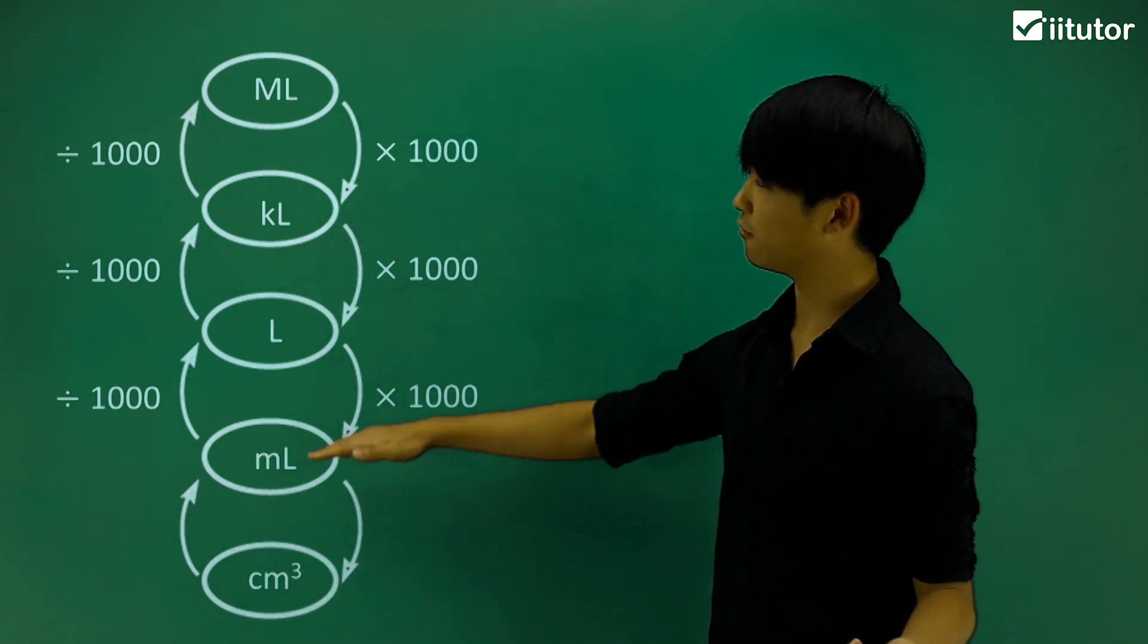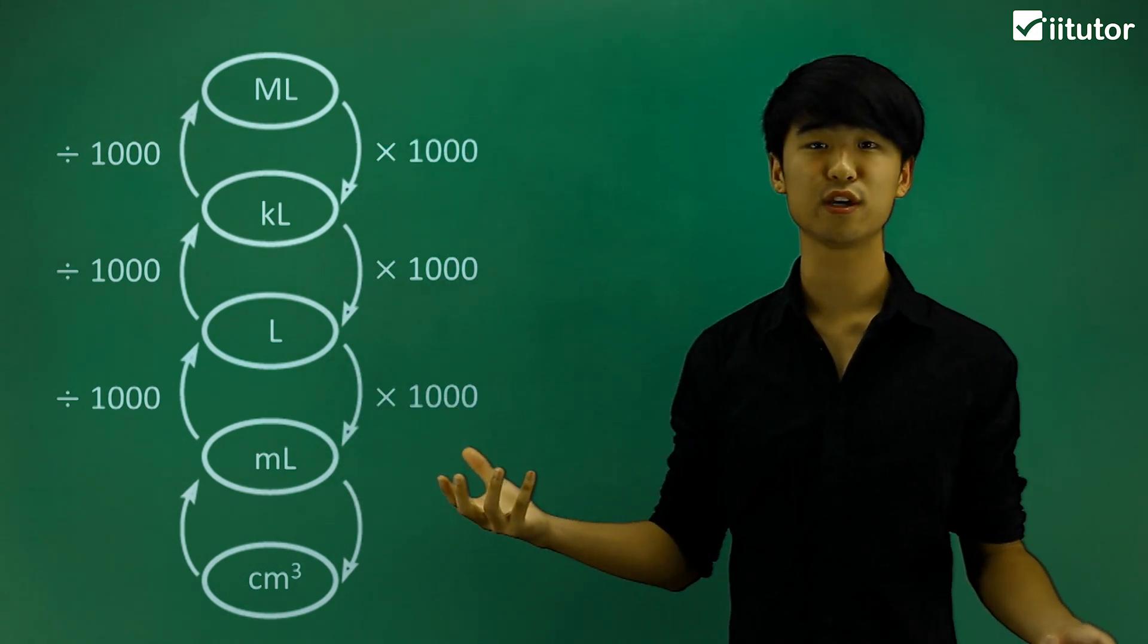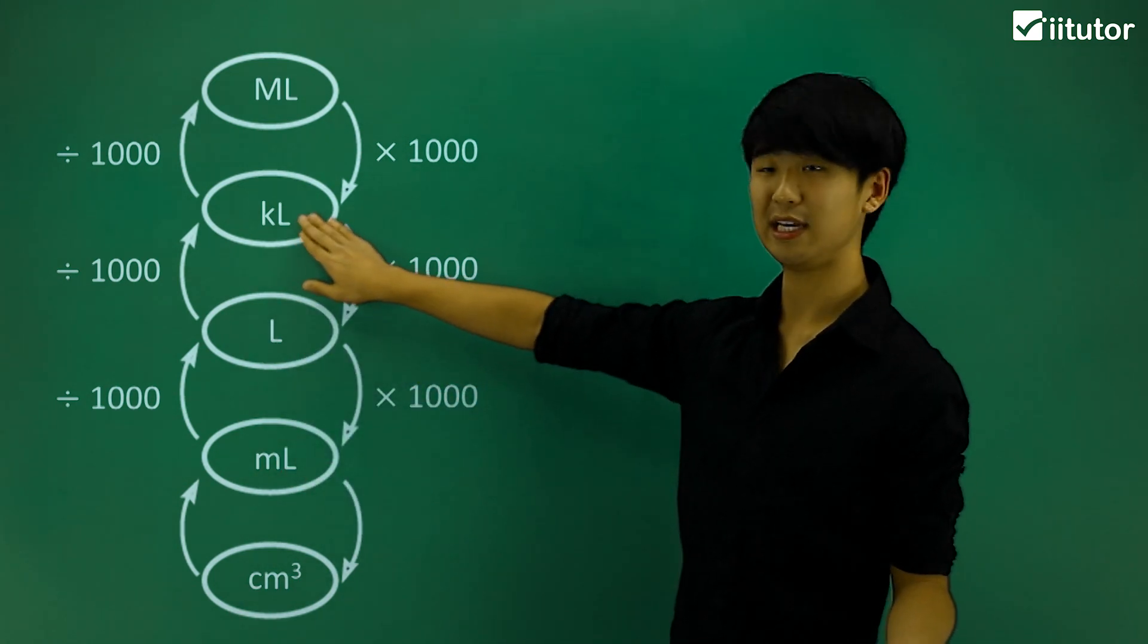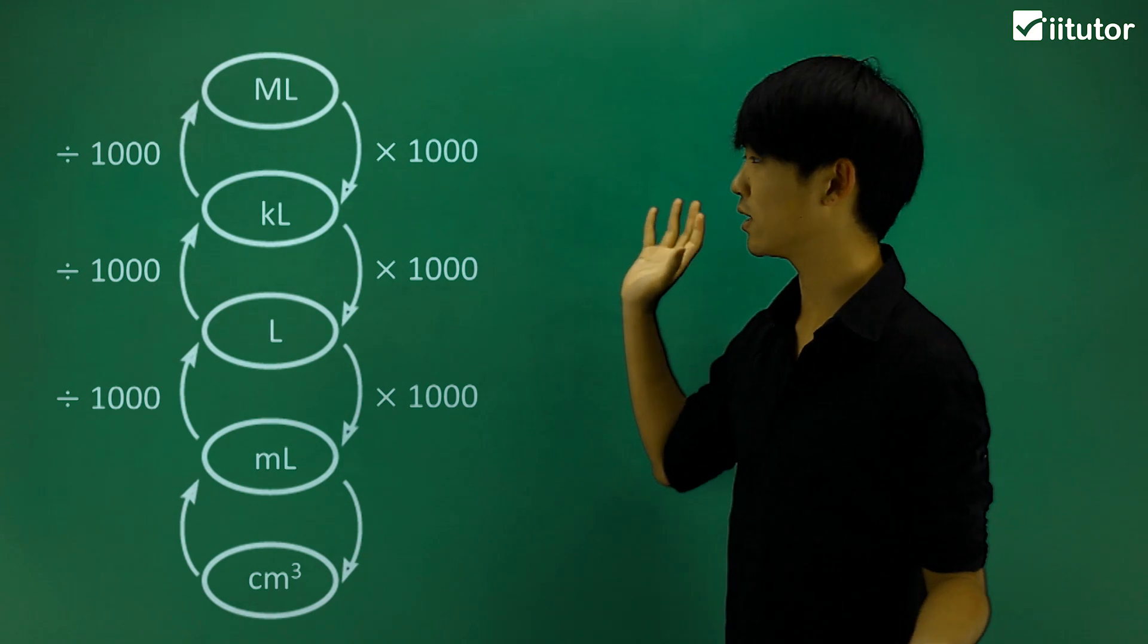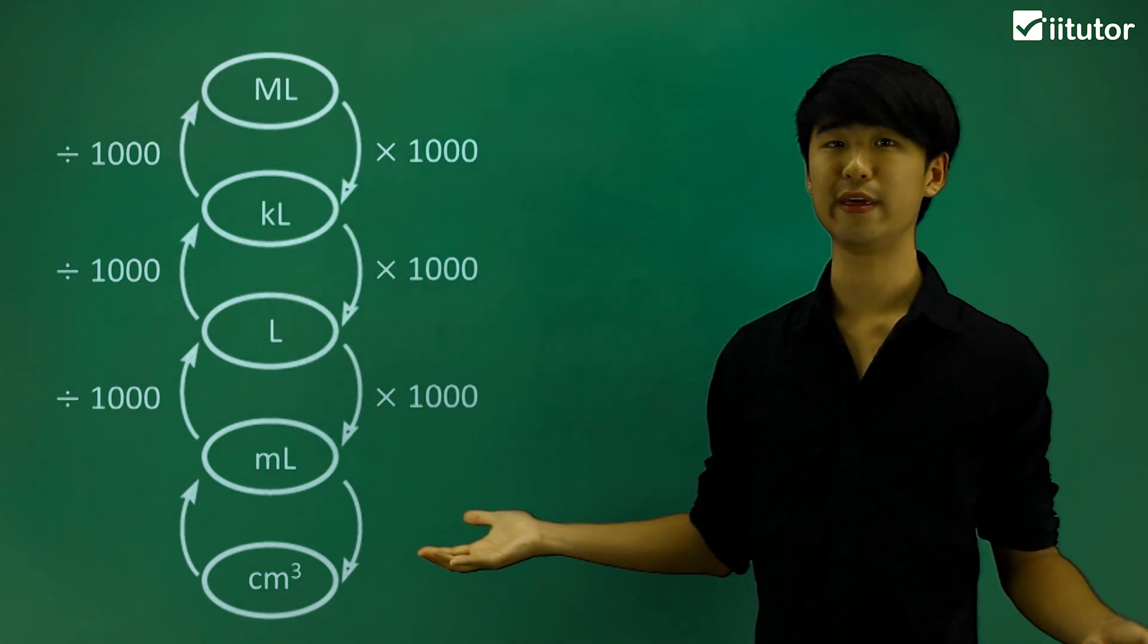Now the top half of this, or the topmost part of this, is looking at the conversion between the different units in capacity. So between milliliters, liters, kiloliters, and also megaliters. And we can see that they are all intertwined by a scale of 1,000.